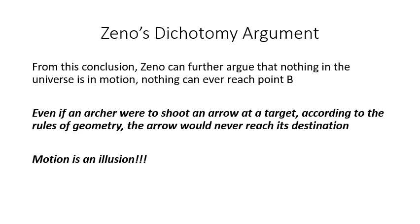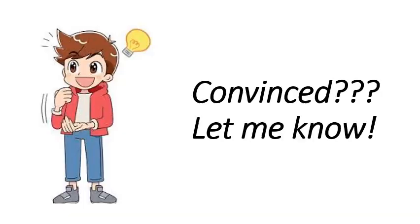So even if an archer were to shoot an arrow at a target, according to the rules of geometry, the arrow would never reach its destination. Because motion, mathematically speaking, is an illusion. Convinced? Let me know.